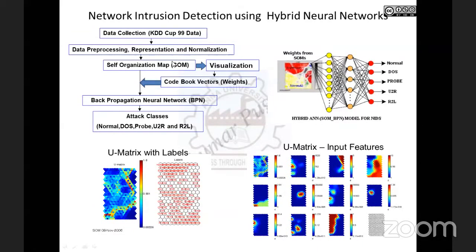In another research case study, a combined model was developed using both BPN and Self-Organizing Map (SOM). The data collection, representation, and pre-processing steps are the same as the previous case. After normalization, the SOM model is applied as an additional stage.